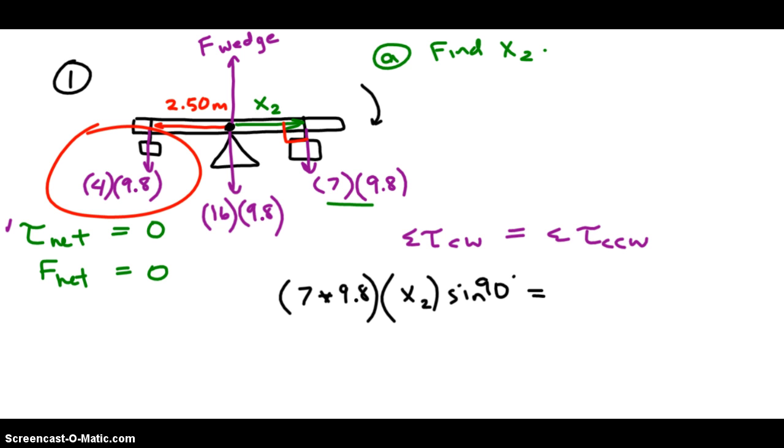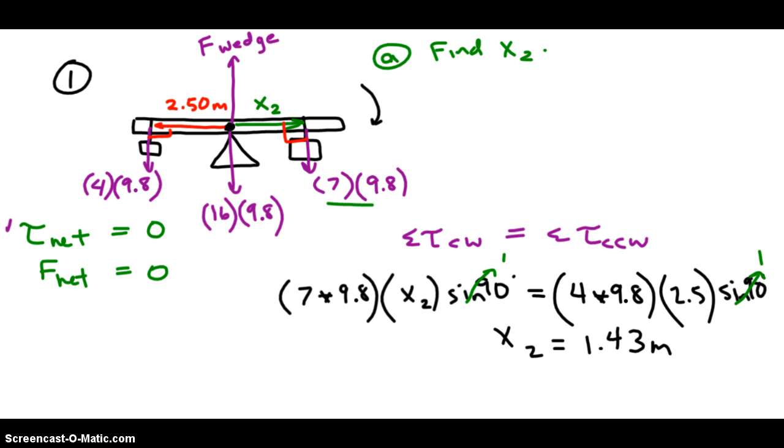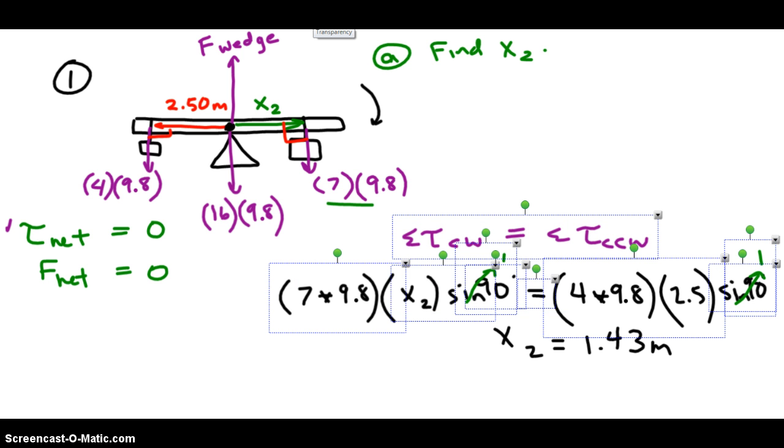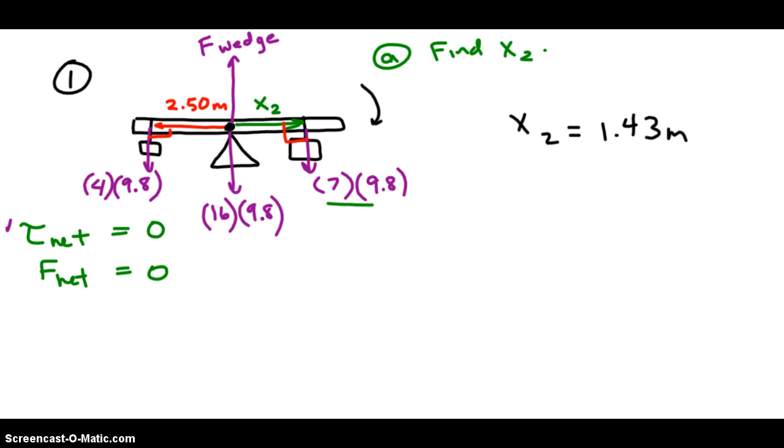There's only one torque pulling counterclockwise if we take this point in the middle as the pivot. It's the force of the smaller block. So on the right side, we put that torque. It's the weight of the small block times the distance at which the force is exerted, times the sine of the angle between the two. And again, just like before, the angle between straight down and straight horizontal is 90 degrees. The seesaw is horizontal. Sine of 90 is 1. We divide both sides by 7 and by 9.8, and we get that the distance x2 is 1.43 meters. That's part A. We're done.